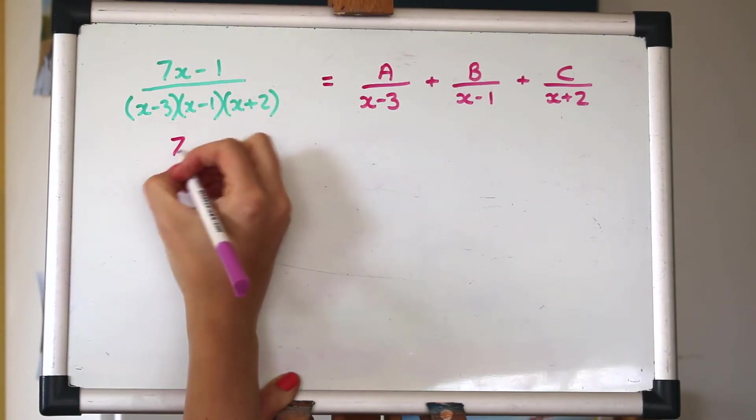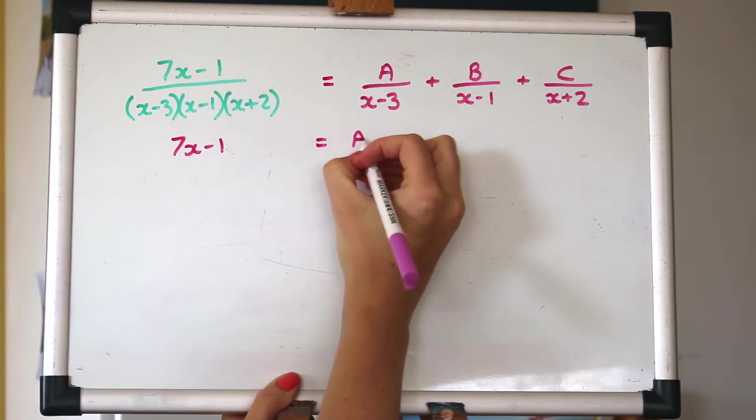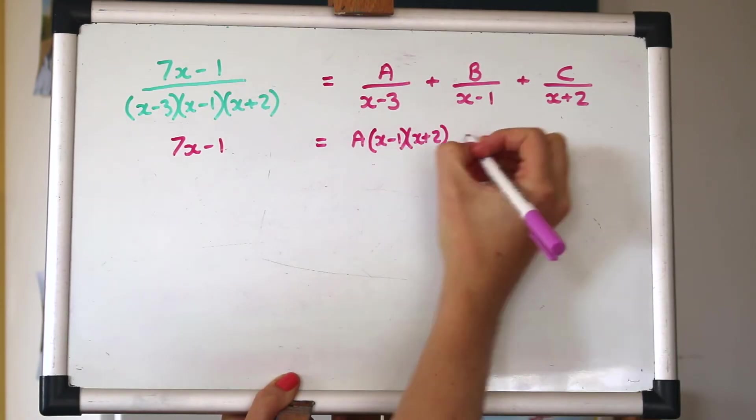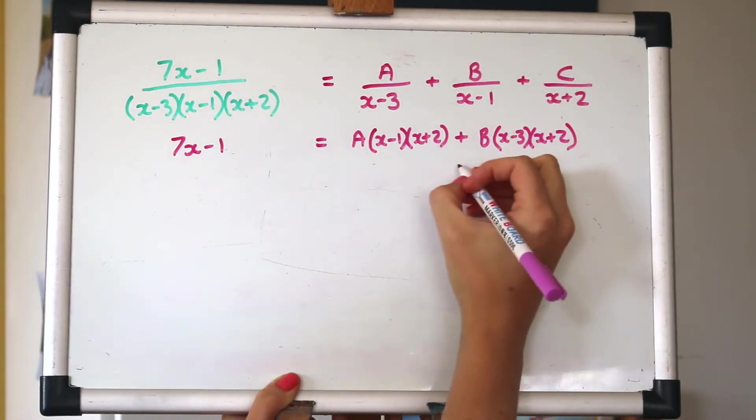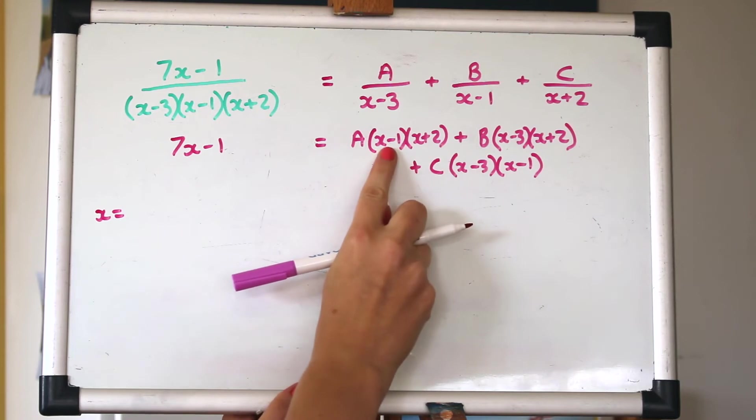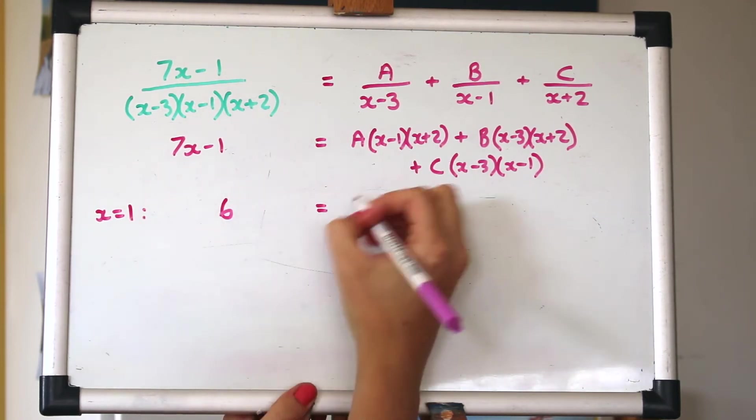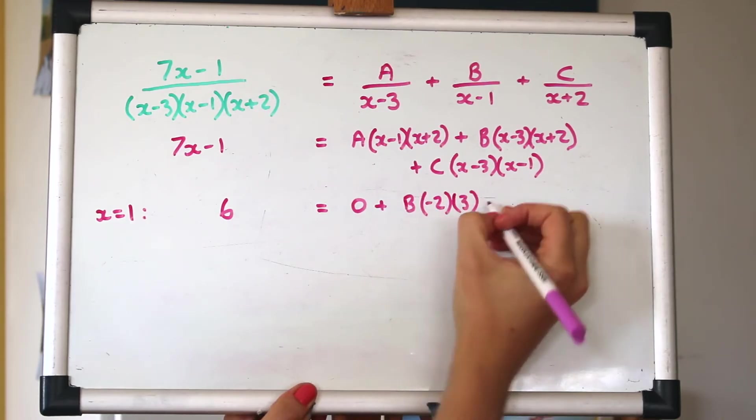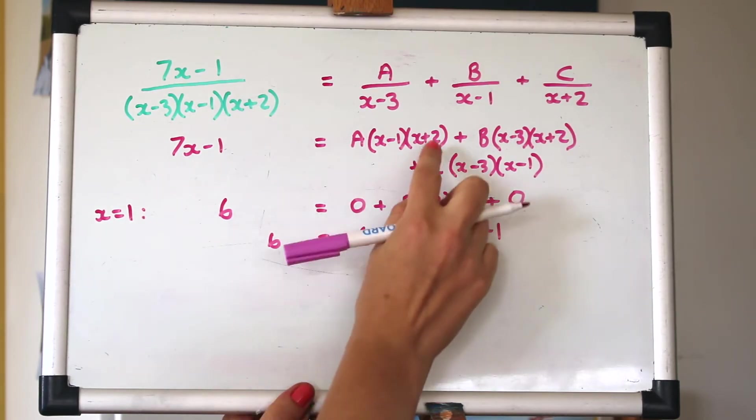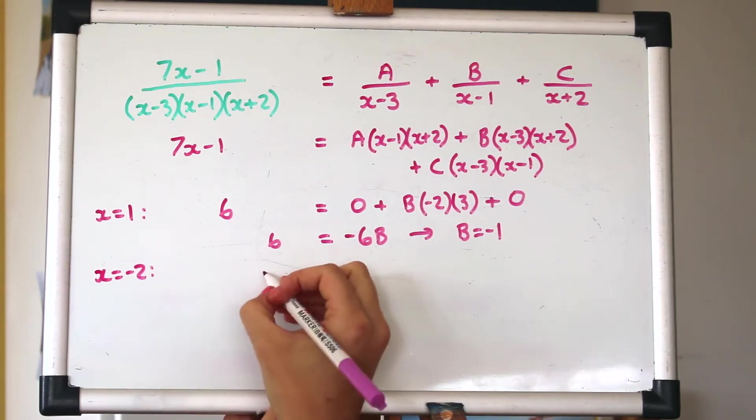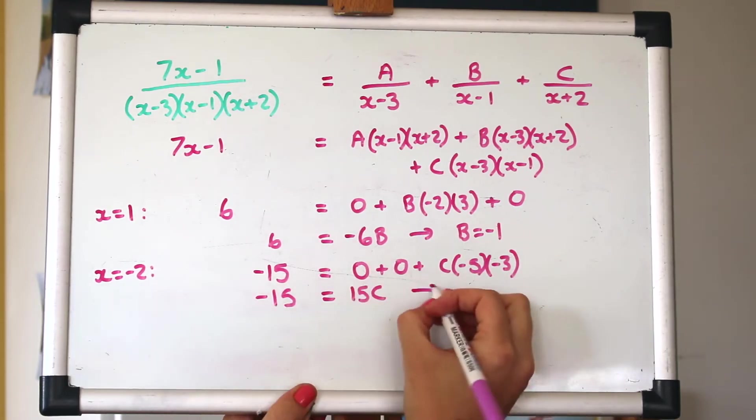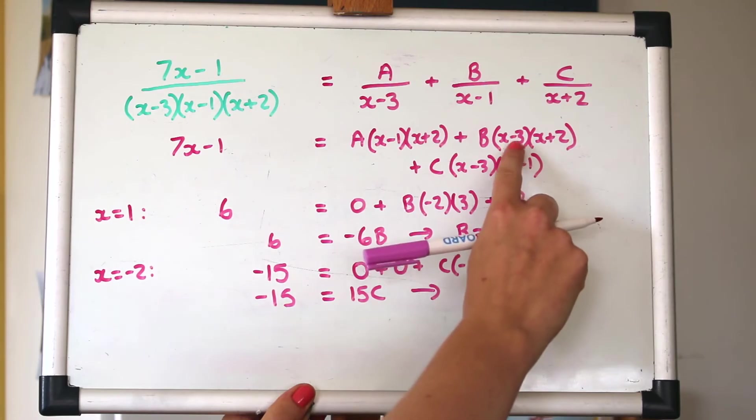Multiplying by the denominator, so we'll be left with that. And this time the x minus 3 would cancel, but we still have both of those factors up here. All right, let's choose some values of x. I'm going to start with 1 to get rid of that bit. So that's b. Let's choose another value of x. Let's go with minus 2. C is minus 1 as well.